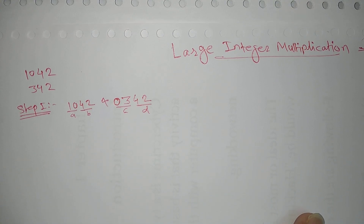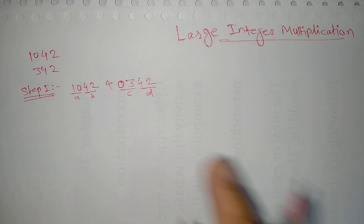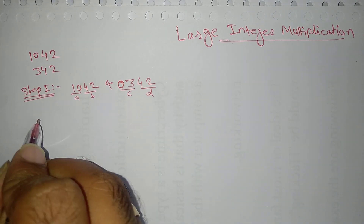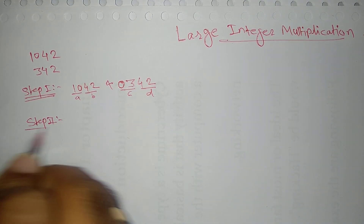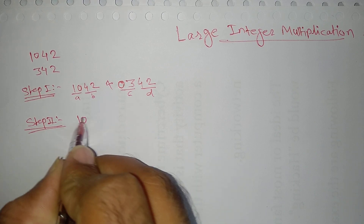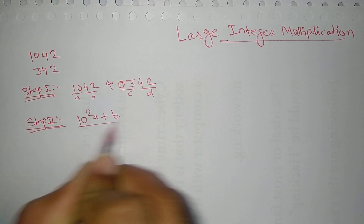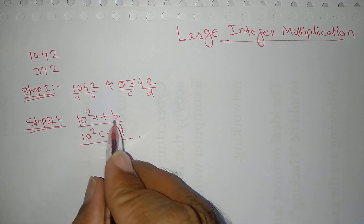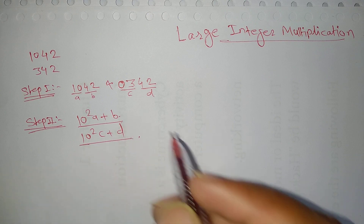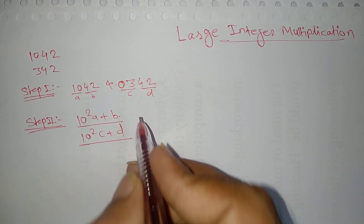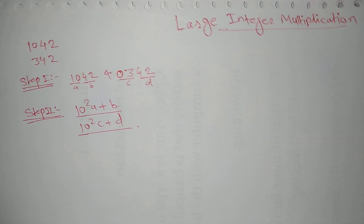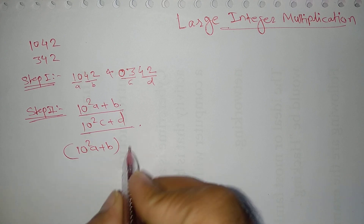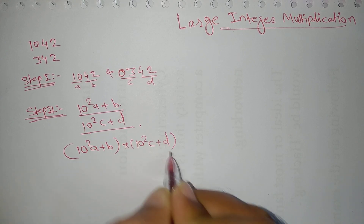To understand this, we use a multiplication formula. In step 1, we have found A, B, C, D. In step 2, I have to find out (10² × A + B) and (10² × C + D). These two values I have to find out in a particular sequence. After that, I have to do the multiplication: (10² × A + B) into (10² × C + D).